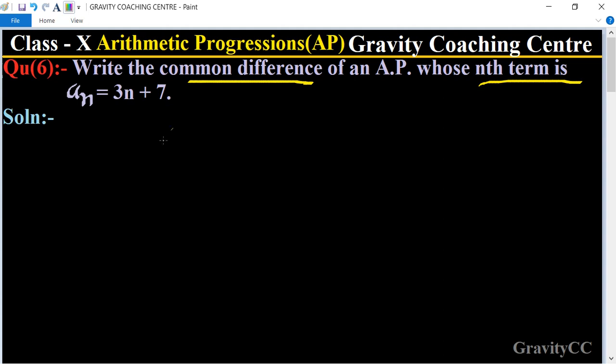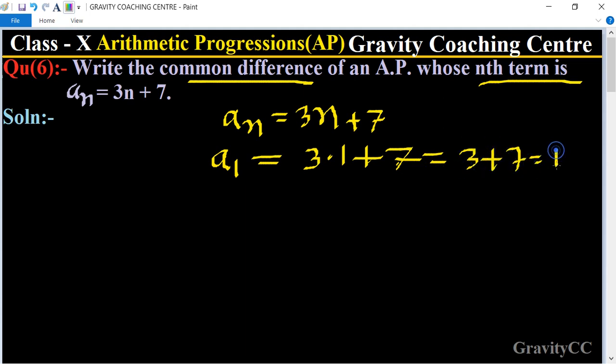The given nth term is 3n + 7. So first we put the value of n equal to 1, so it will become 3·1 + 7 equal to 3 + 7 equal to 10.